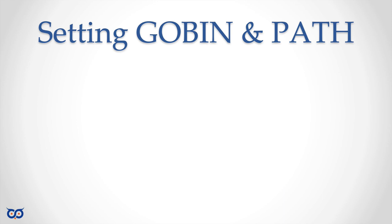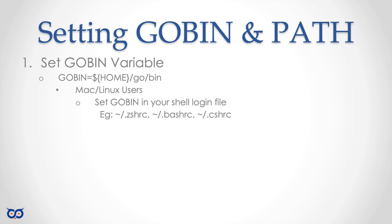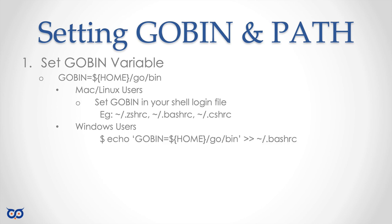In terms of setting up your go-bin directory and your PATH variable, let's assume your GOBIN variable is assigned the home directory slash go slash bin. For Mac and Linux users this is easy — you can set this in your login shell. For Windows users, you can use the Windows method of setting an environment variable. If you installed Git and bash, you can type this command at the bash command line to set your GOBIN directory. If you did not install Git, you'll need to look up how to set environment variables in Windows.